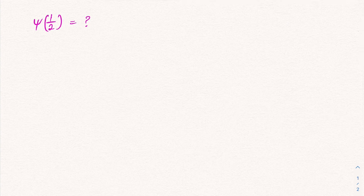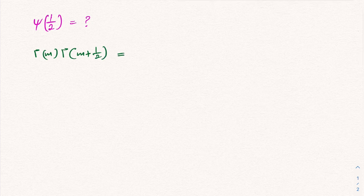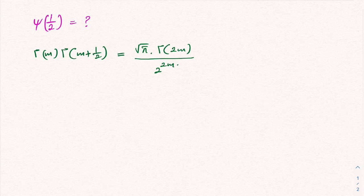First, I am going to recall the legendary duplication formula of the gamma function. We know gamma of m times gamma of m plus one half is equal to the square root of pi times gamma of 2m, over 2 raised to the 2m minus 1. In a previous video I proved this identity — if you like to watch that video I will add the link in the description and also make a card.